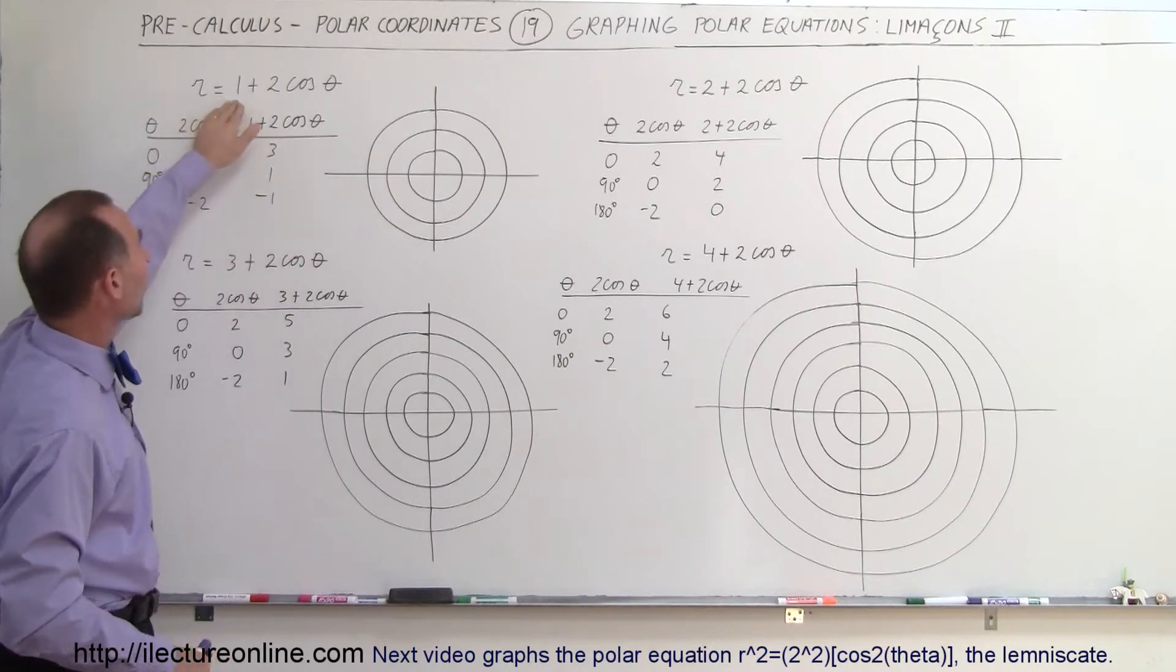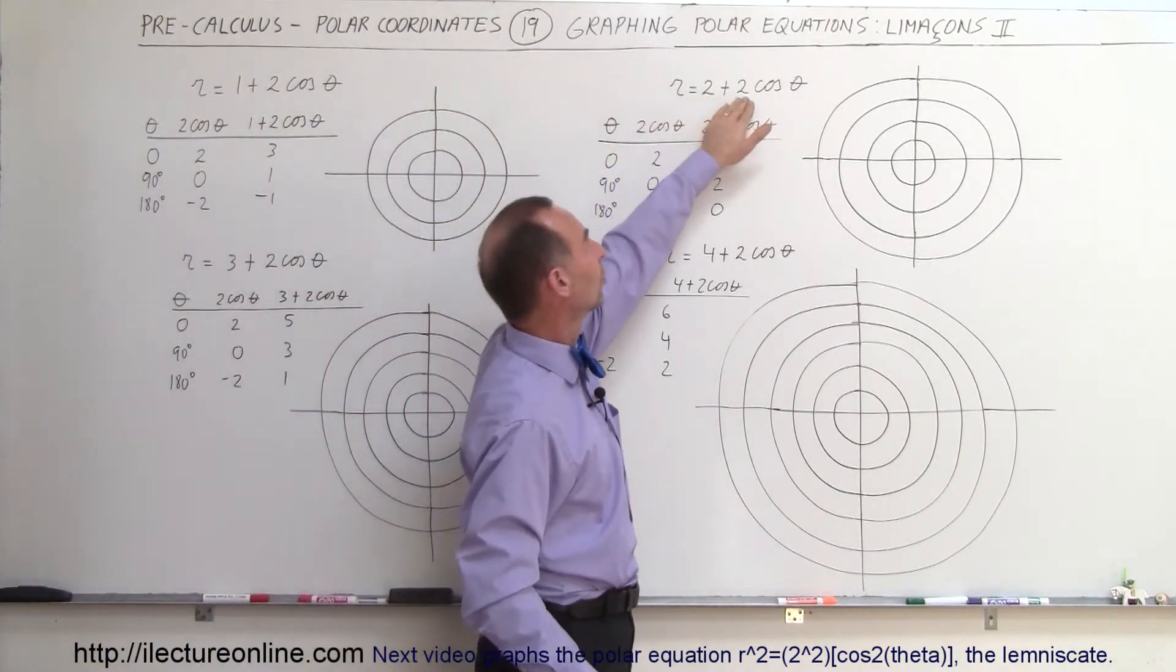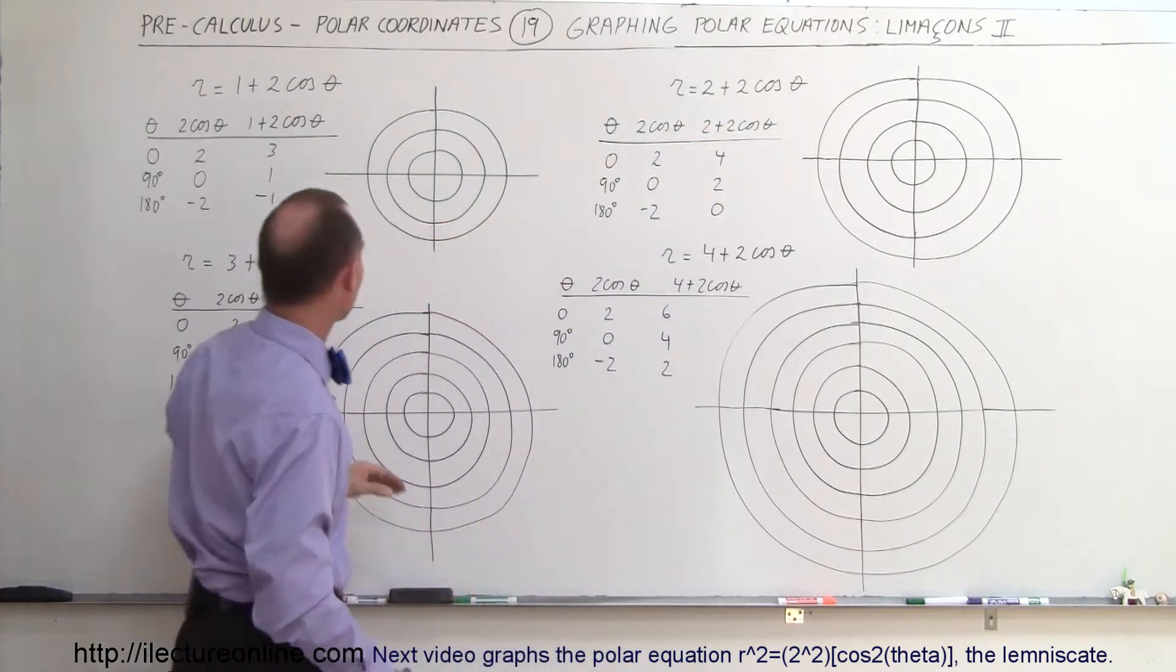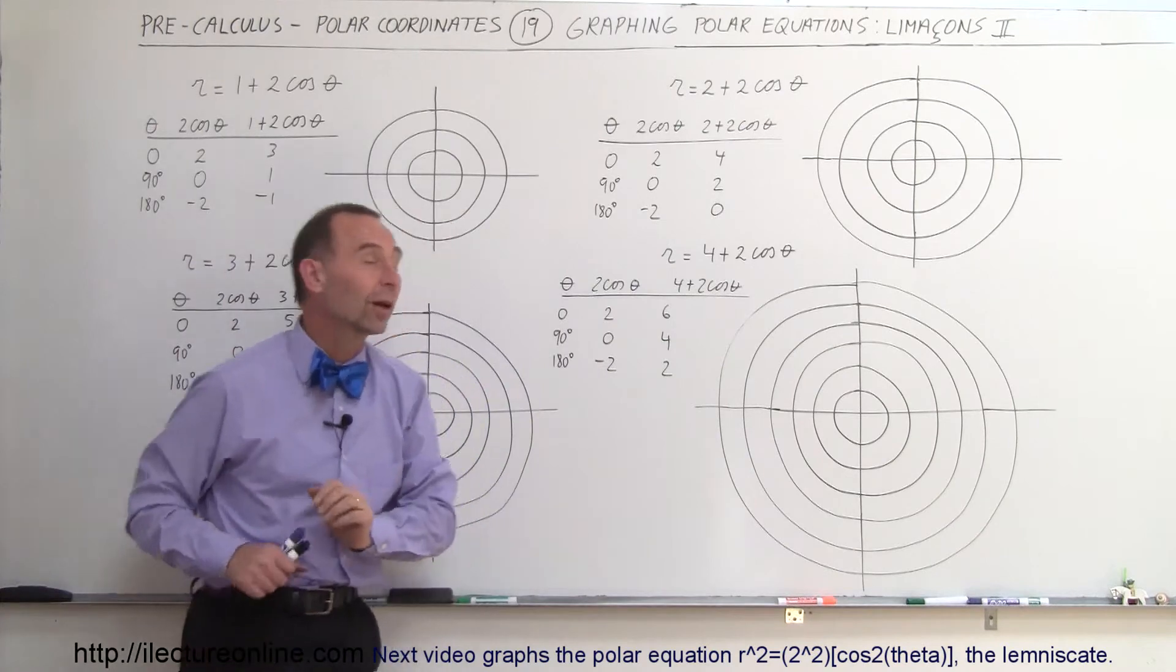So here we have r equals 1 plus 2 times the cosine of theta, there we have r equals 2 plus 2 times the cosine of theta, here we have 3 plus 2 times the cosine of theta, and there we have 4 plus 2 times the cosine of theta.